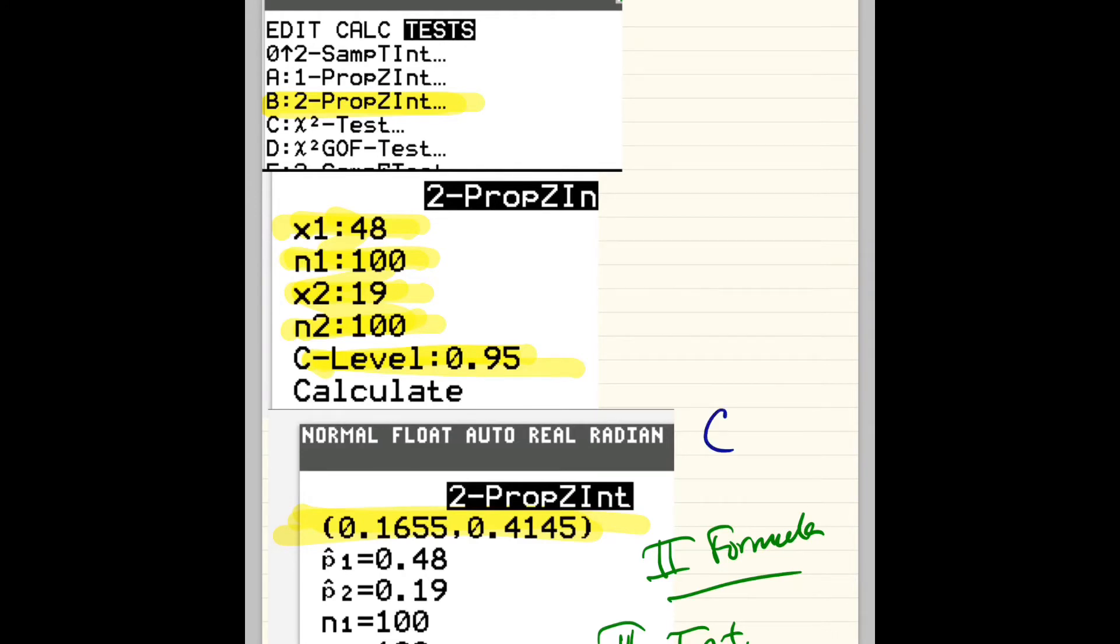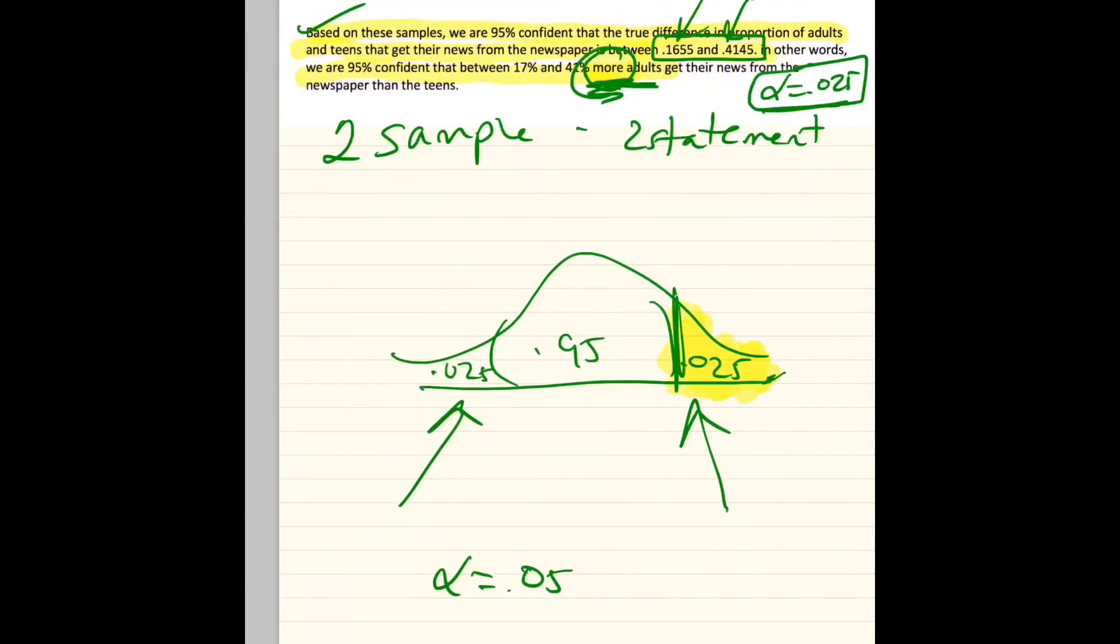How do we interpret this? First and foremost, all these numbers are positive. Second, two sample means two statements. The first statement is going to be regular. So we are 99% confident. Let me get rid of this. Sorry. We are 95% confident.